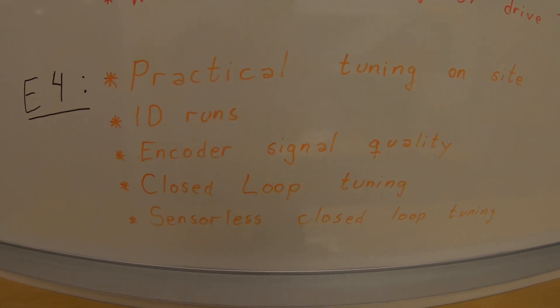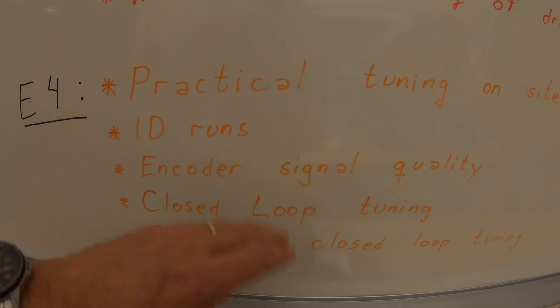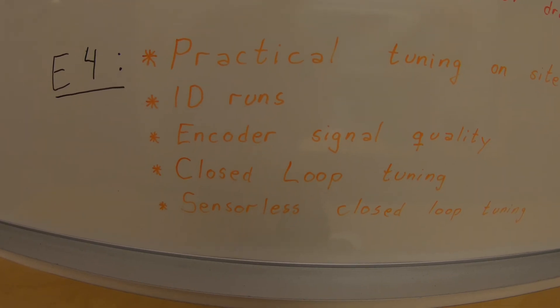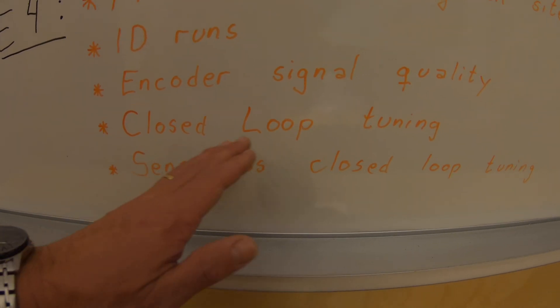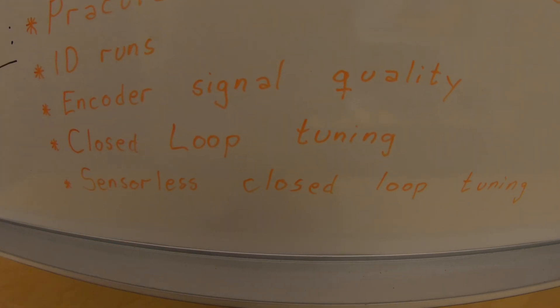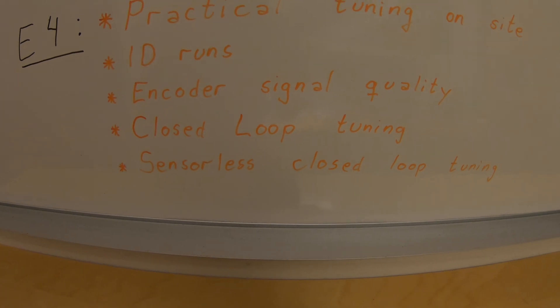Episode four we go to a shipyard to a site and we take a look at identification runs in practical life. We look at encoder signal quality, how this affects the closed loop tuning and also take a look at setting up sensorless closed loop.